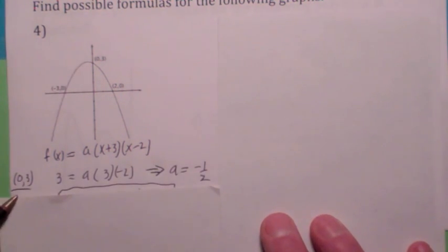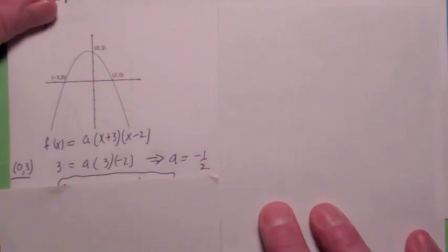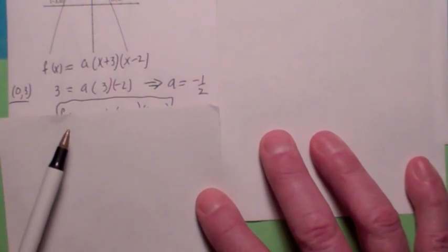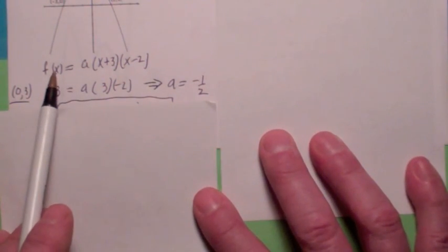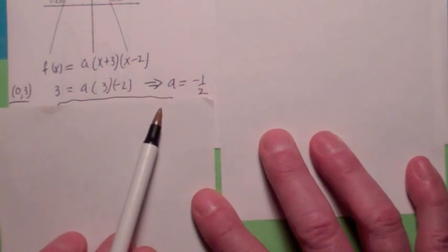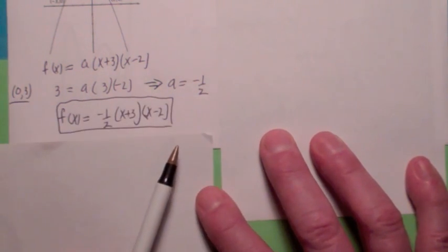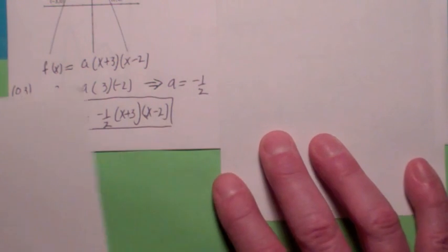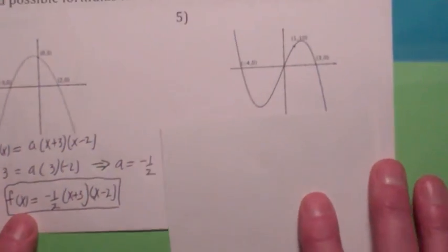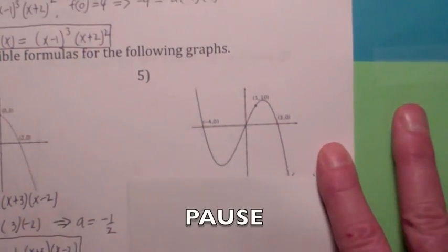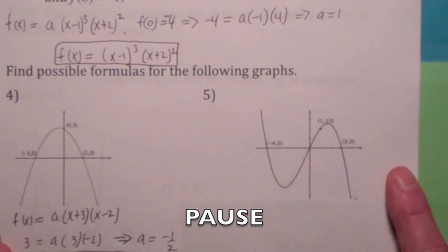You'd plug 0 for x, and you would plug in 3 for y. So you plug in 3 for y, plug in 0 for x, you get this. In this case, a becomes negative 1 half, right? So there's your answer. All right, try this one. Here's a 3rd degree polynomial function. See if you can find the possible formula for that one.